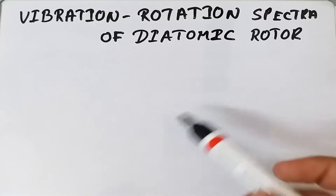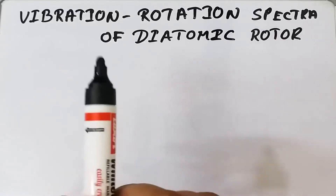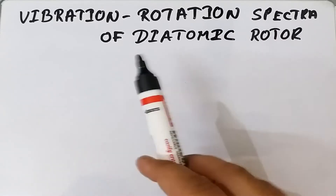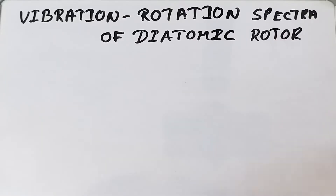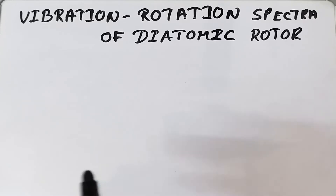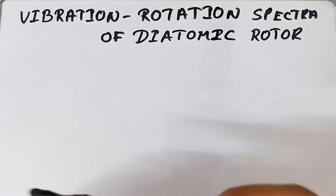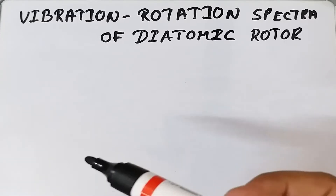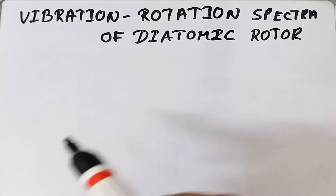Welcome. Today we are going to discuss vibration and rotation spectra of a diatomic molecule, also called a diatomic rotor. In case of rotational spectra we supply microwave radiation, while in case of vibrational spectra we apply infrared radiation. The energy of microwave radiation is lesser compared to infrared radiation.